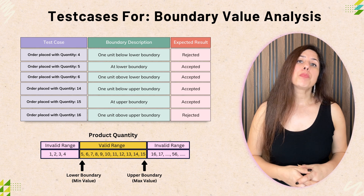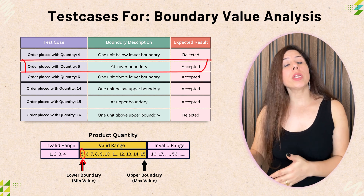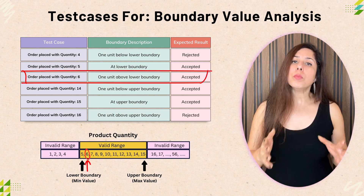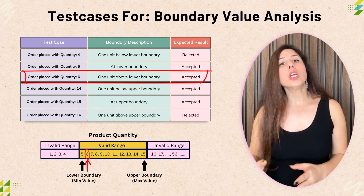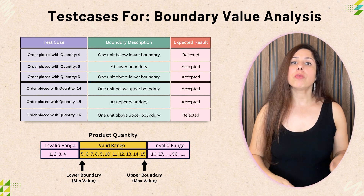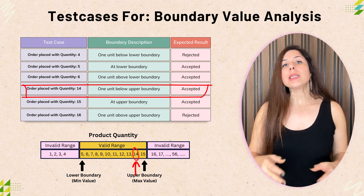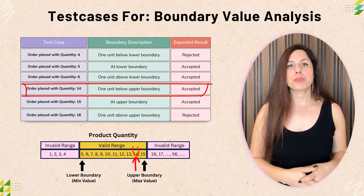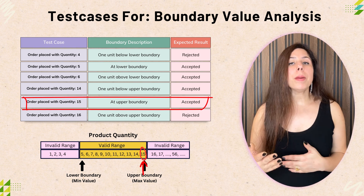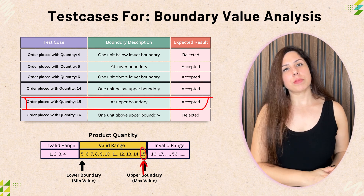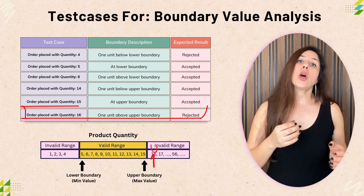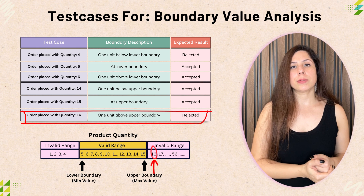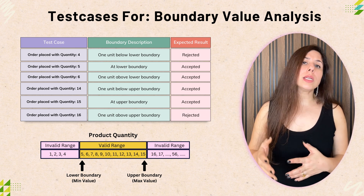The six key test cases are: first, an order with one unit below the lower boundary should be rejected; second, the order at the lower boundary should be accepted; third, an order with one unit more than the lower boundary should be accepted; fourth, an order with one unit less than the upper boundary should be accepted; fifth, an order with the upper boundary should be accepted; and sixth, an order with one unit above the upper boundary should be rejected. This way, we thoroughly test the boundary values of this functionality, which is known as boundary value analysis.